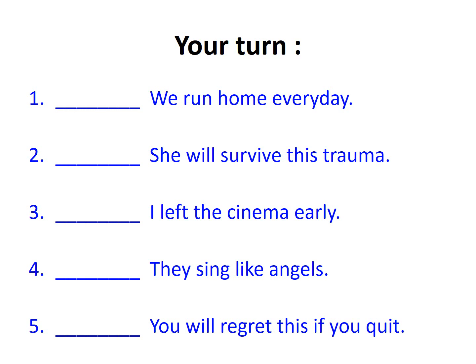So, how did you get on? 'We run home every day' — sounds very healthy! 'We run' is an ongoing action because it happens every day, so this must be in the present tense. 'She will survive this trauma' — 'she will survive' is in the future tense; it's believed that in the future she will overcome whatever struggle it is, and it hasn't happened yet. 'I left the cinema early' — 'I left' has happened, so it must be in the past tense.